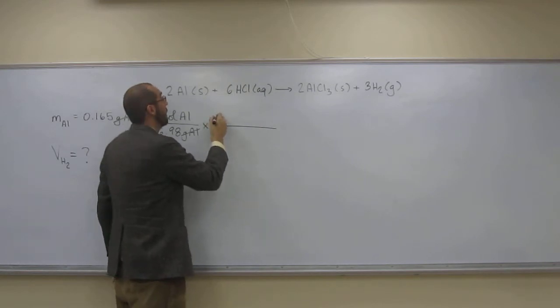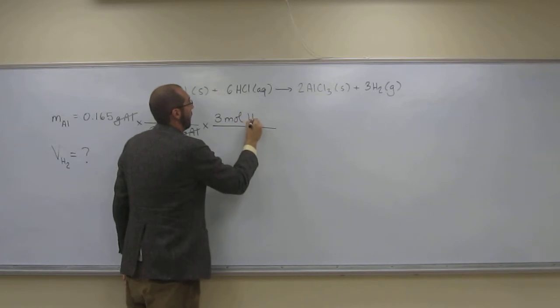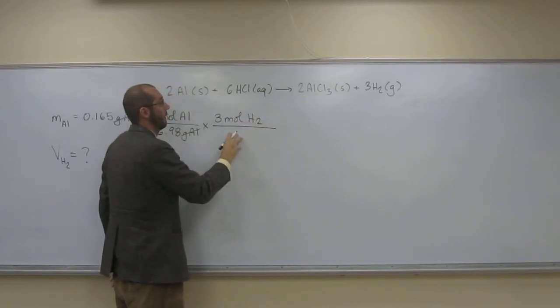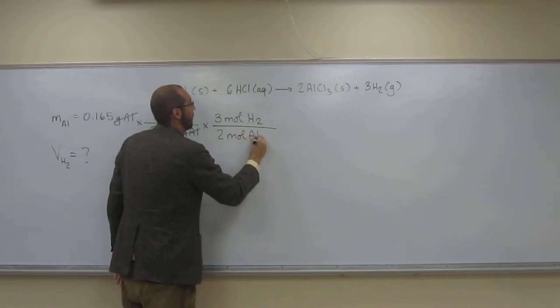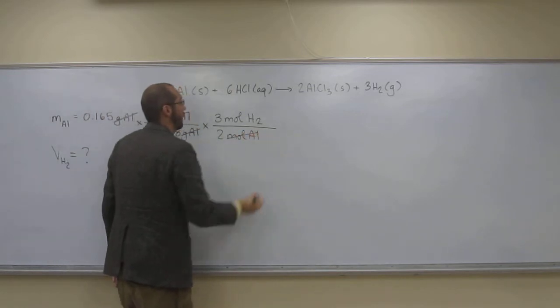How many moles of hydrogen? Three moles of hydrogen. And down here? Two moles of aluminum.